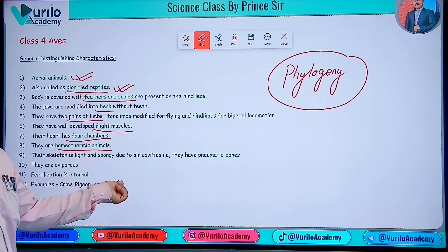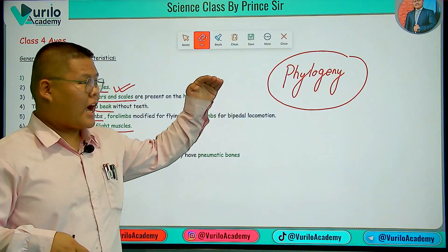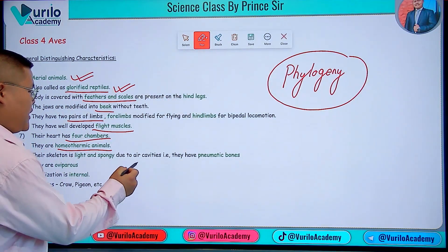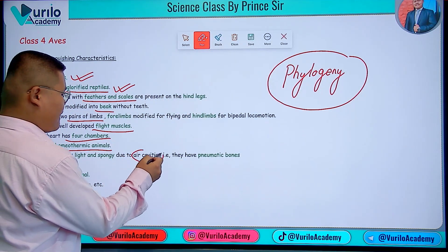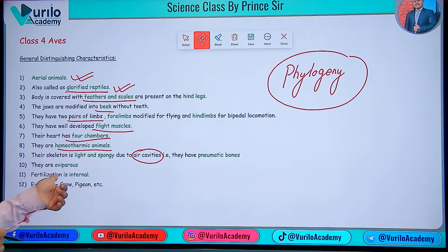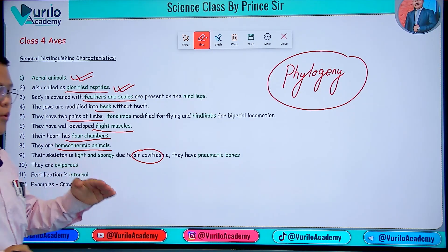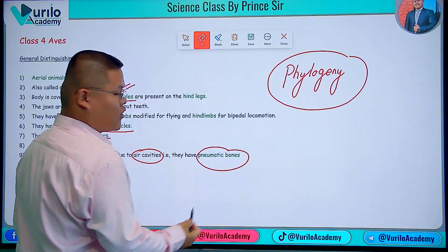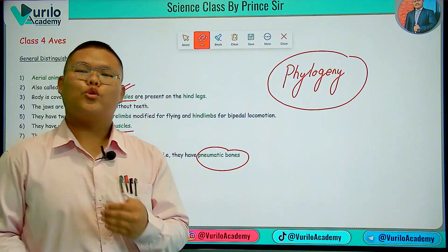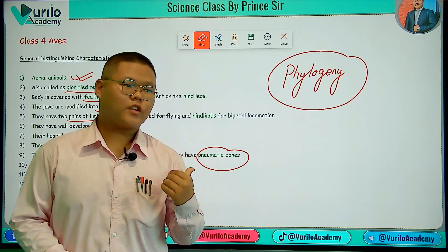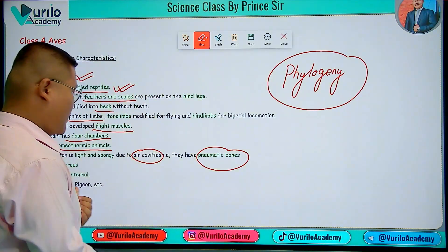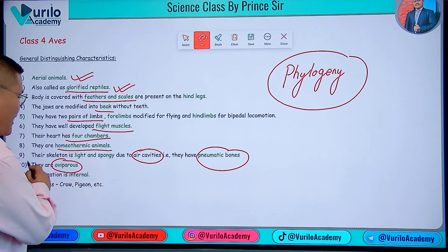The skeleton is light and spongy. Because of the light and spongy skeleton, birds are able to fly. Air cavities are present in the skeleton, which makes the bones slightly hollow. These types of bones are called pneumatic bones — a very important point to remember.